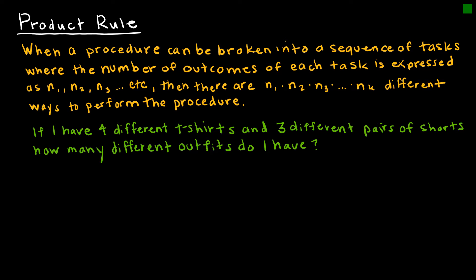For instance, let's say I'm getting dressed and I'm going to wear shorts and a t-shirt. If I have four different t-shirts and three different pairs of shorts, how many different outfits do I have? I can just use the product rule to say four times three equals 12 different outfits.